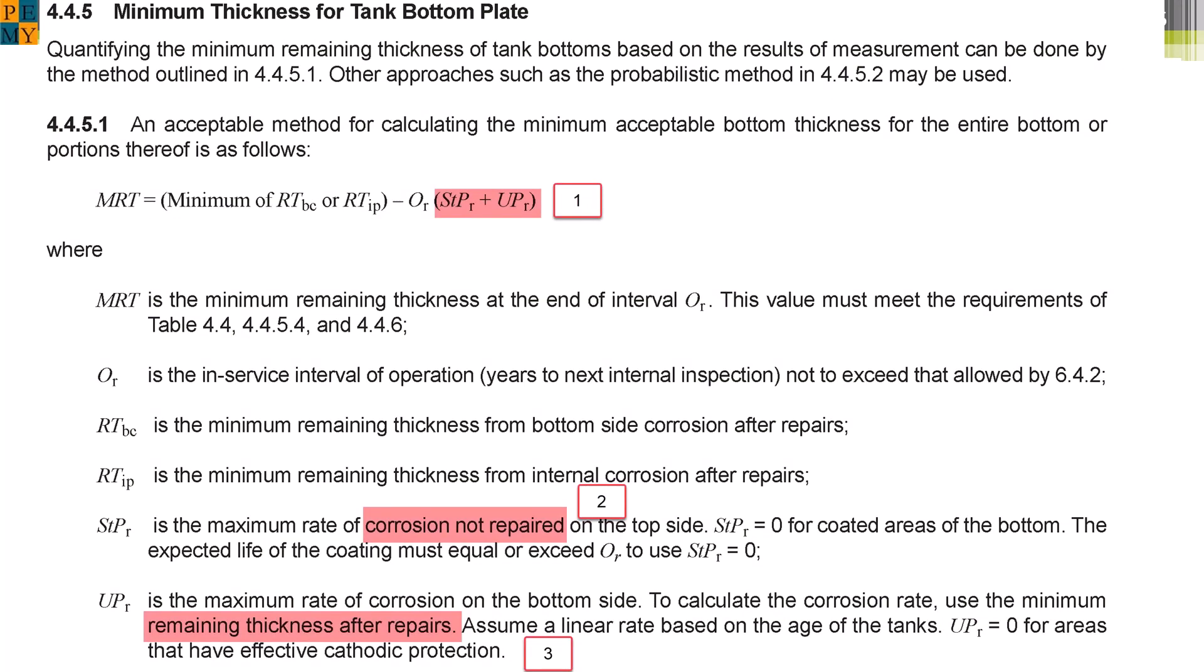This is a snapshot of the offending language governing the API 653 intervals. There are three problem areas. The first problem is unclear and confusing language. For example, in item 2, does the maximum rate of corrosion not repaired mean corrosion depth is after repairs or before repairs?